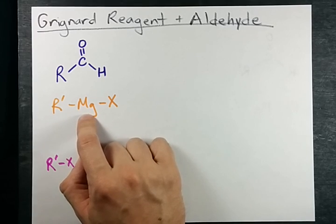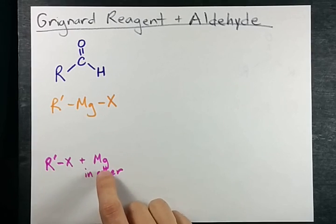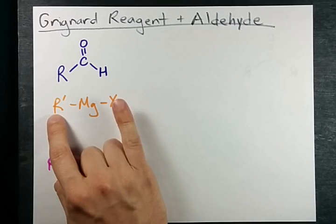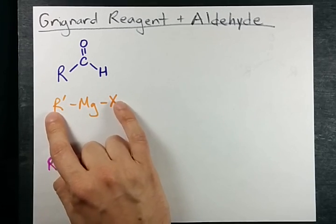With a Grignard reagent. That is an alkyl halide that has been mixed with magnesium and ether to create this thing, which is the same as the alkyl halide but with an Mg in between the carbon chain and the X.